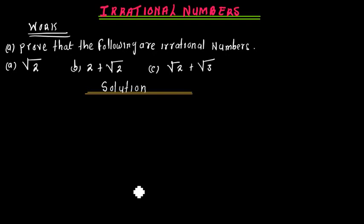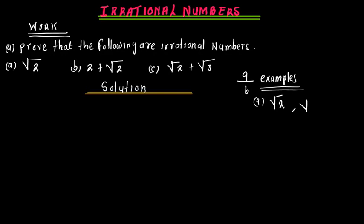Irrational numbers are simply numbers that cannot be expressed in the form a over b. Examples of irrational numbers include root of two, root of three, and root of seven. We can also have something like 22 over 7, which happens to be pi, so pi is also an irrational number.